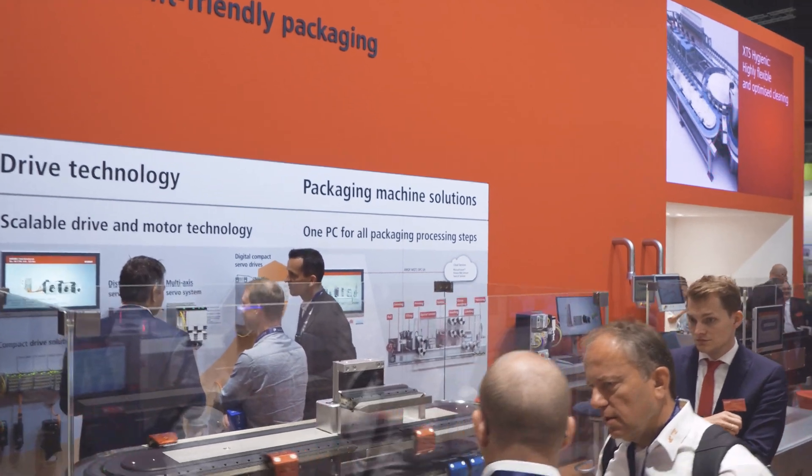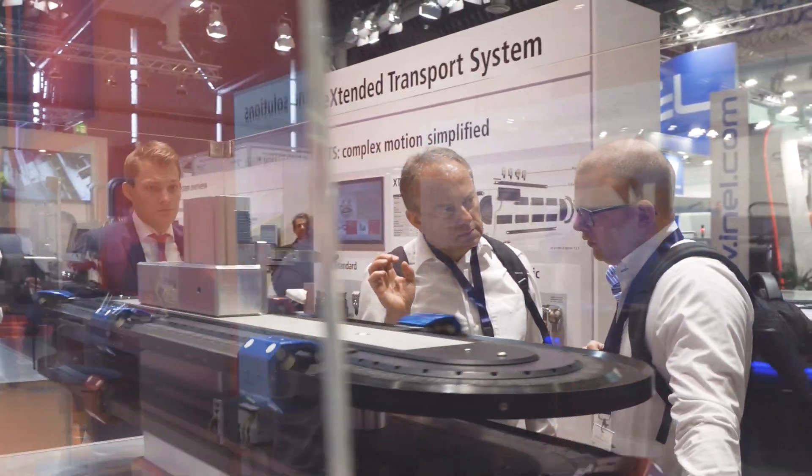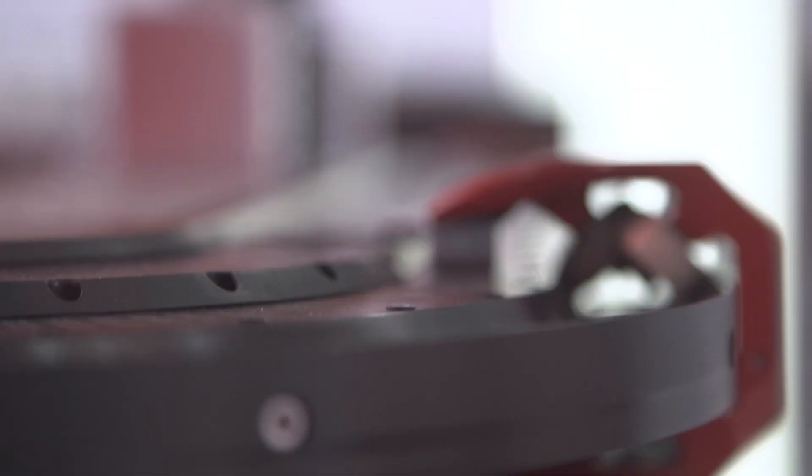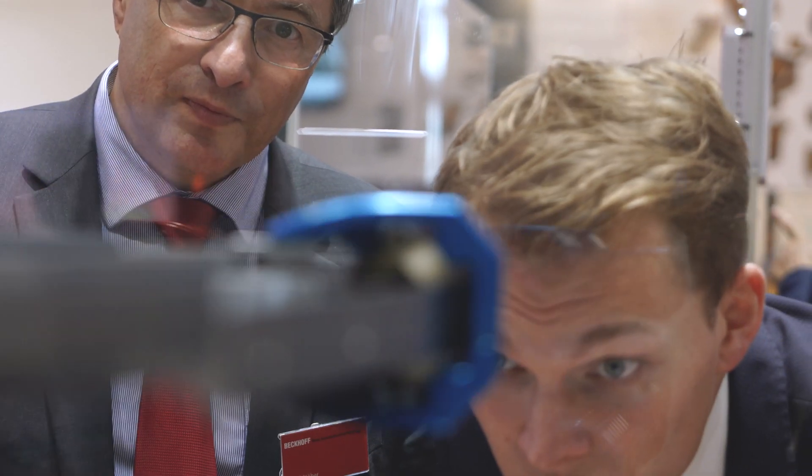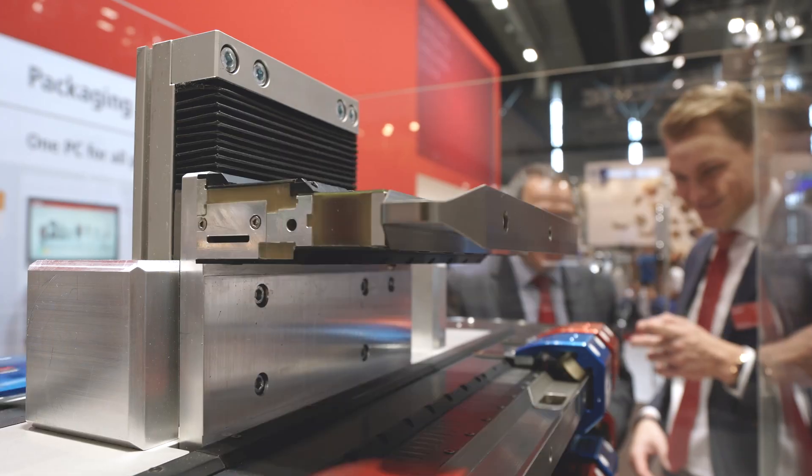The XTS track management software function makes packaging lines and machine concepts even more flexible. With its help, it is possible for motor modules and the movers located on them to move between several systems.